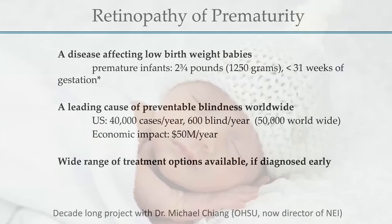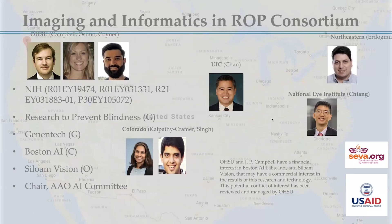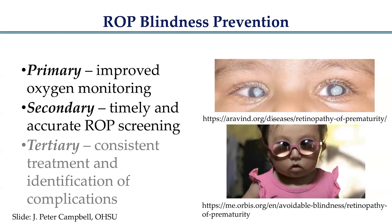Now I'm going to switch to ophthalmology. Another disease we've been spending a lot of time on over the last decade-plus, working with Dr. Michael Chang who is now the director of the NEI, is retinopathy of prematurity — a disease affecting low birth weight babies and one of the leading causes of preventable childhood blindness worldwide. There's a large number of babies, more so worldwide than in the US, who may go blind from this disease. But there's a wide range of treatment options available if diagnosed early. We've been seeing if our image analysis algorithms can help with this problem through a large multi-site consortium.